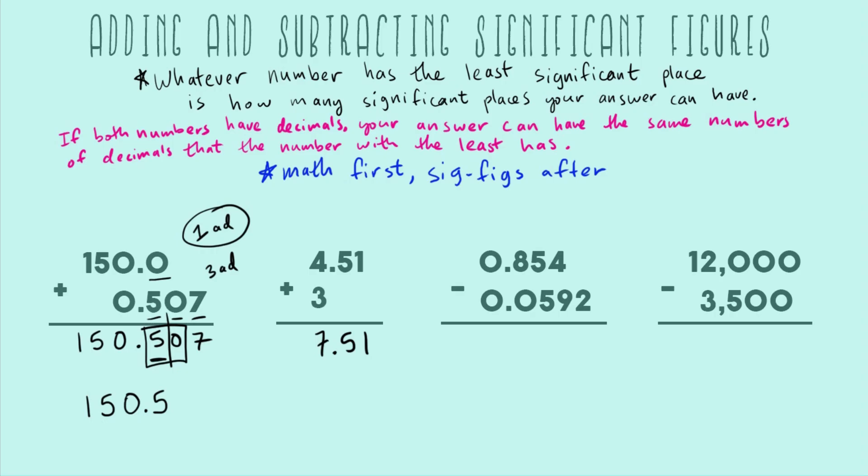Whatever number has the least significant place is how many significant places your answer can have. We've got 4.51, so 4 is in the 1's position, 5 is in the 10ths position, and 1 is in the 100ths position. And 3 only has something in the 1's position. So this 3 is the least significant place.